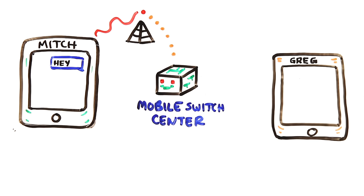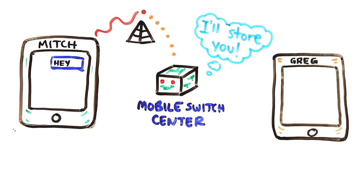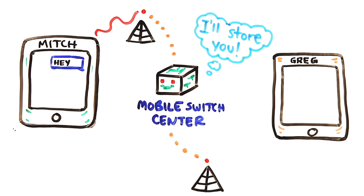If you're out of range or your phone is off, the message is stored by the mobile switching center for a short time until you can be located by the network. The network then figures out which tower you're closest to and passes the signal there.